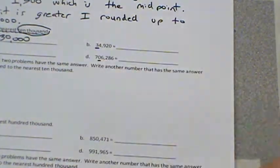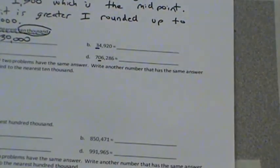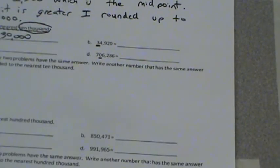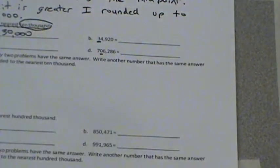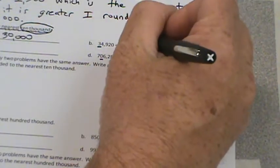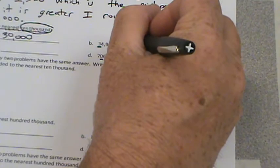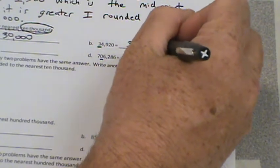Let's go over here. 34,920. On 10,000 we have 30,000, 40,000. Our midpoint would be 35,000. Is this greater than or less than 35,000? We can clearly see 34,000 is less than 35,000, so we would round down to 30,000.